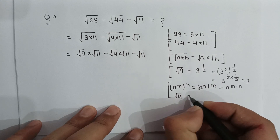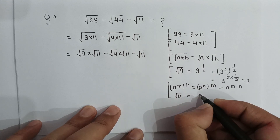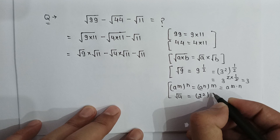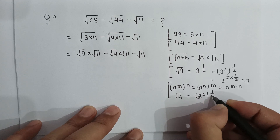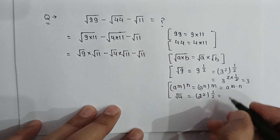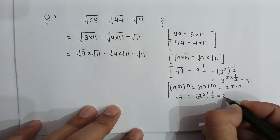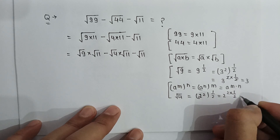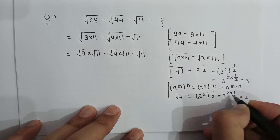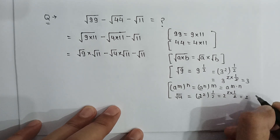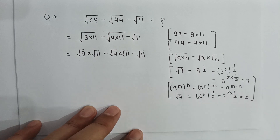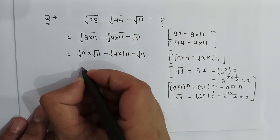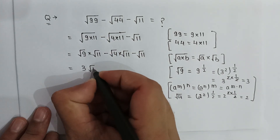Similarly, square root of 4 can be written as 2 squared to the power 1 over 2, which equals 2 to the power 2 multiplied by 1 over 2, giving 2. So the expression becomes 3 times square root of 11, minus 2 times square root of 11, minus square root of 11.